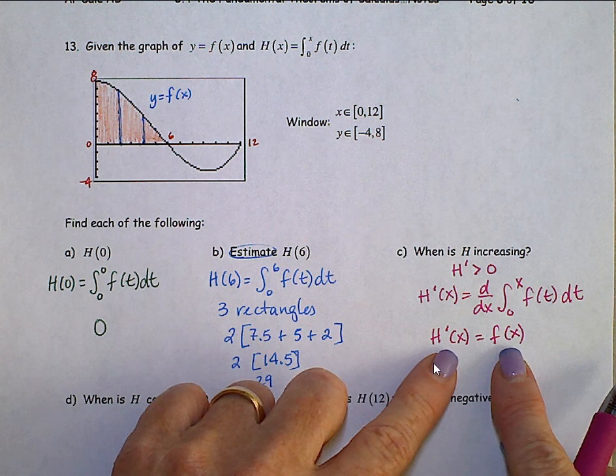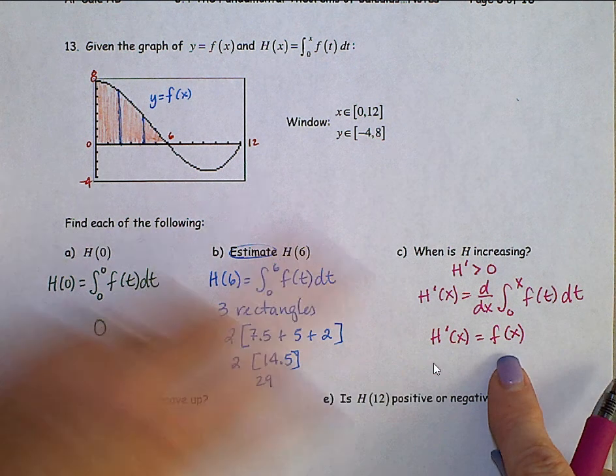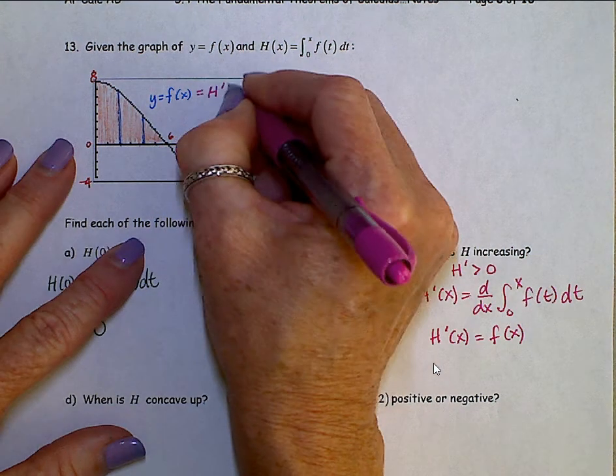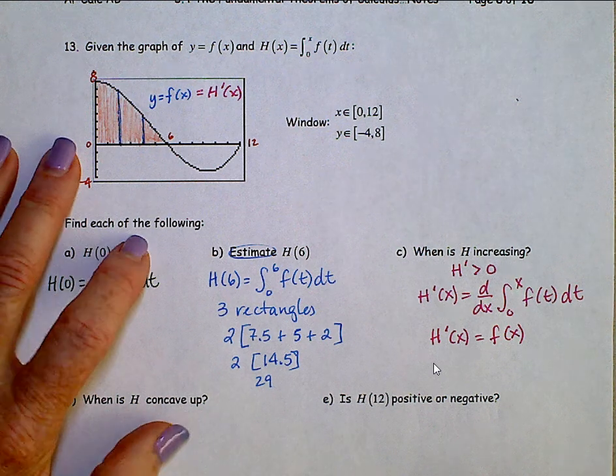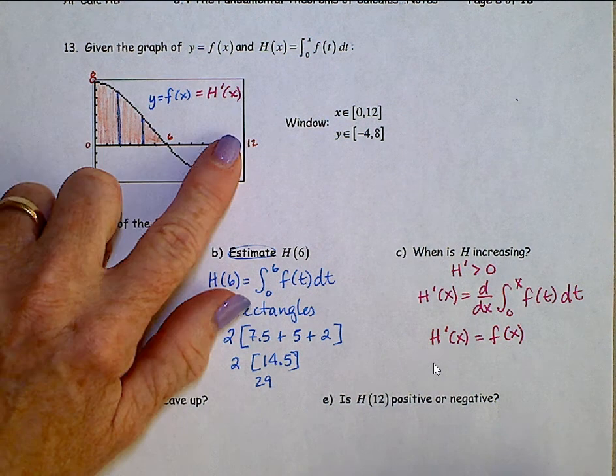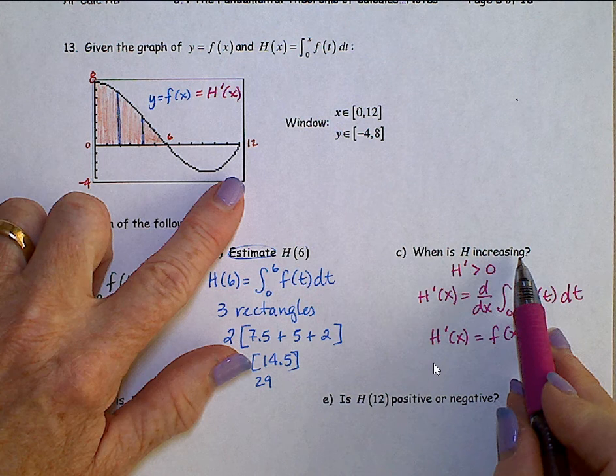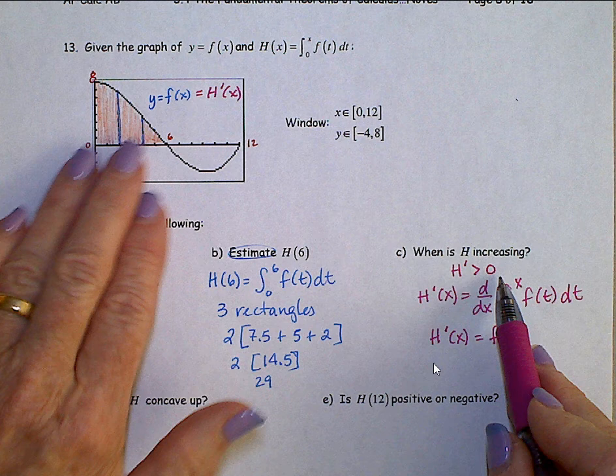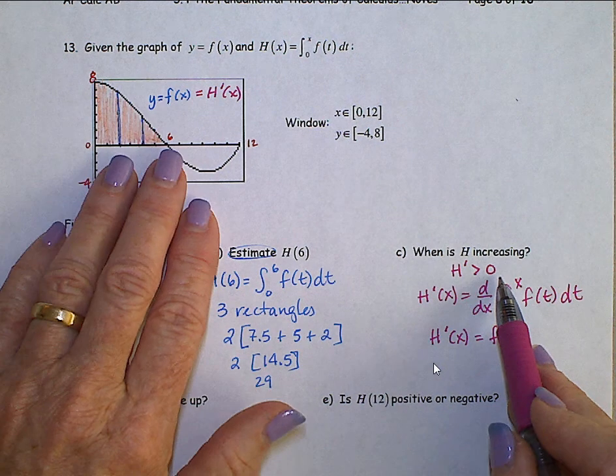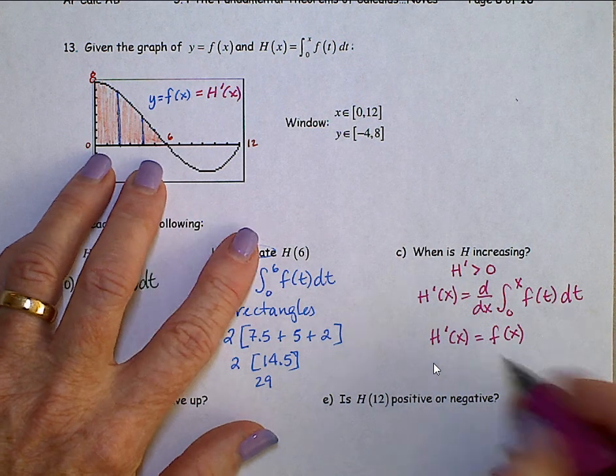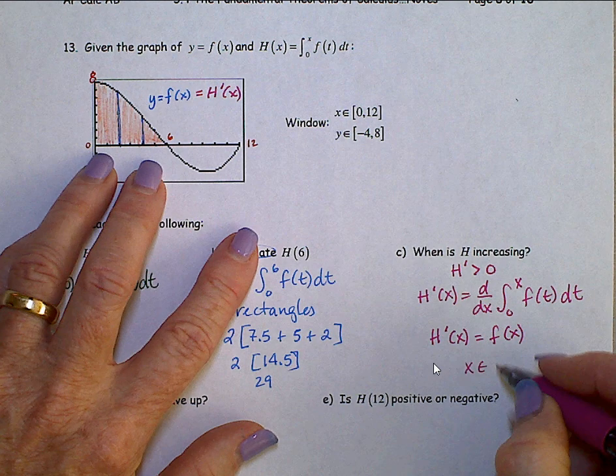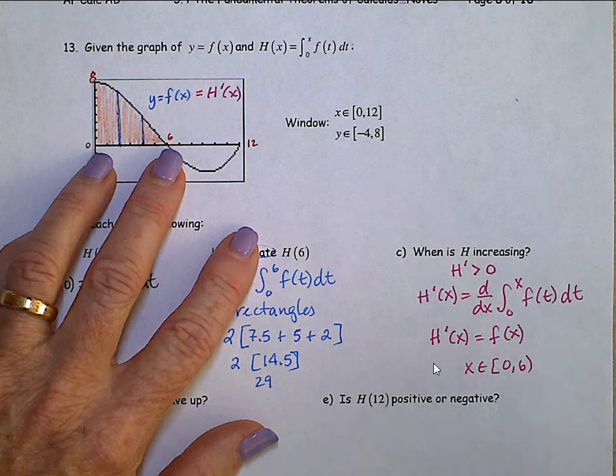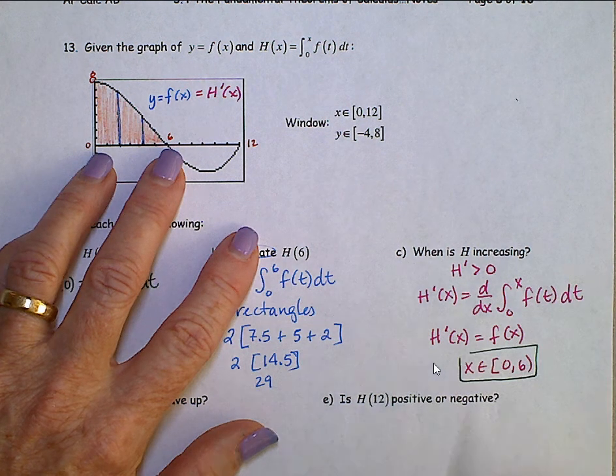What does that tell us? That tells us that this graph, f of x, can also be thought of as h prime of x. So now we can look and see where is h increasing. h increases when h prime is greater than 0. This is the graph of h prime now. So h prime is greater than 0 when x is between 0 and 6. And that's it right there.